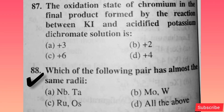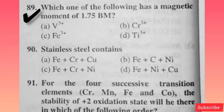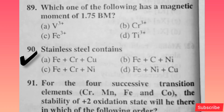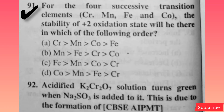Which of the following pair has almost the same radius? All of the above — option D is correct. Which one of the following has a magnetic moment of 1.73 BM? Option D is correct. Stainless steel contains — option C is correct. For the four successive transition elements Cr, Mn, Fe, and Co, the stability of the +2 oxidation state will be in which of the following order?